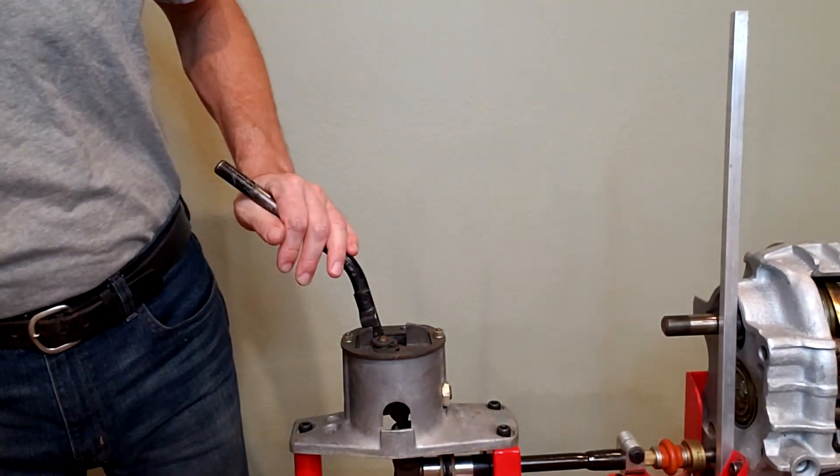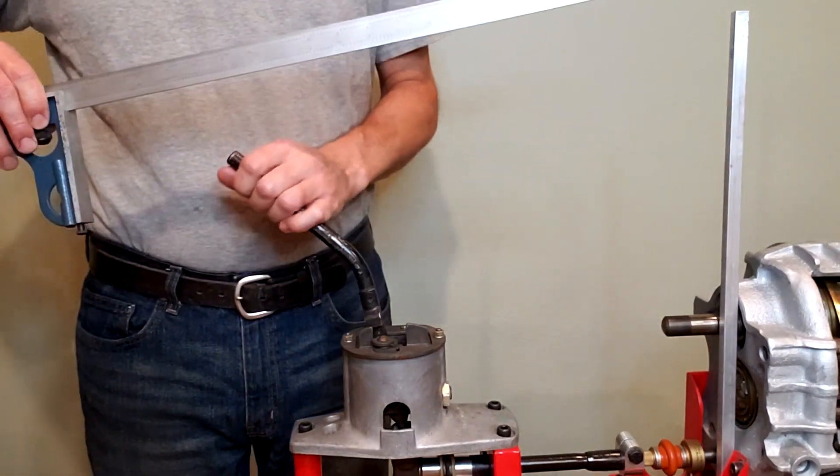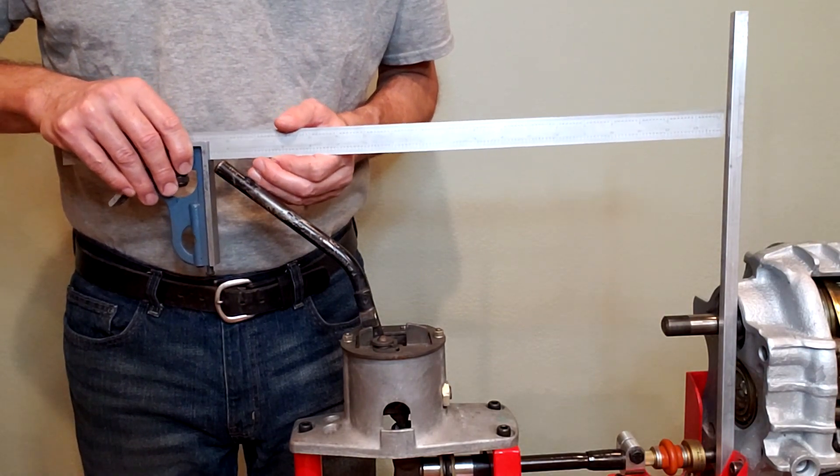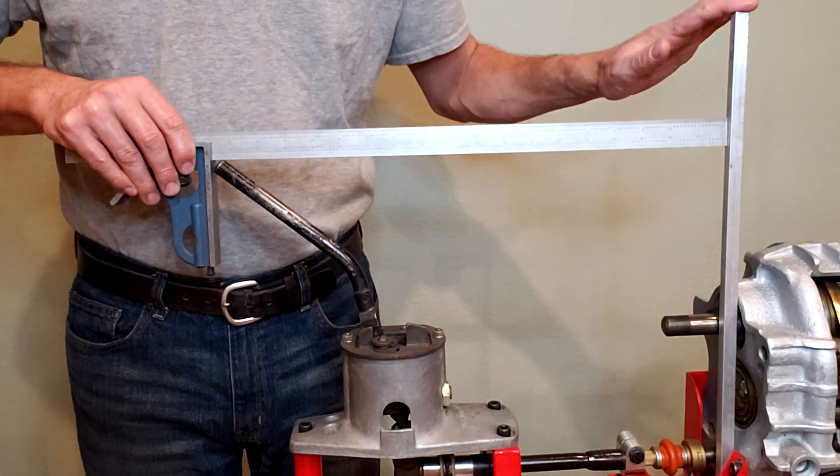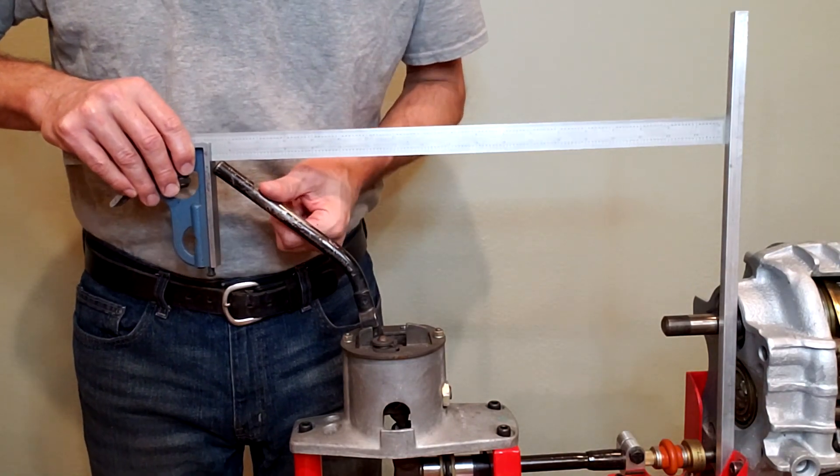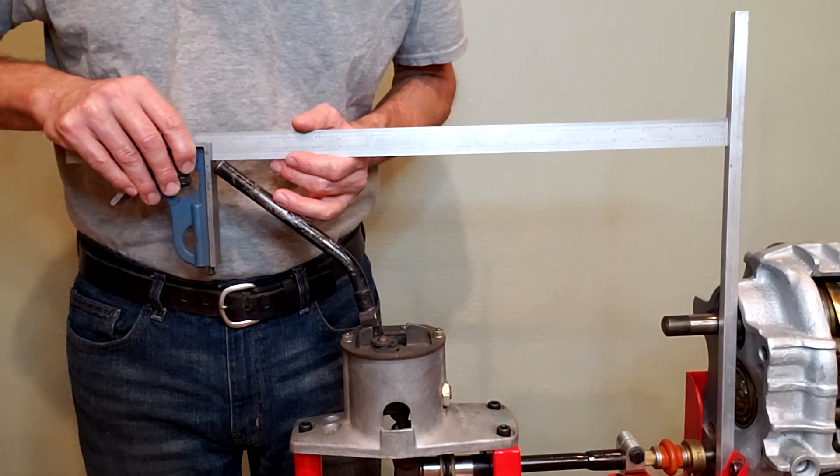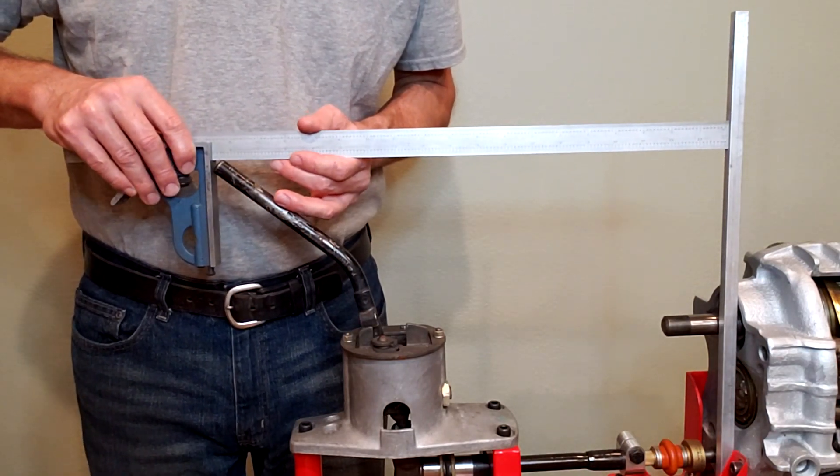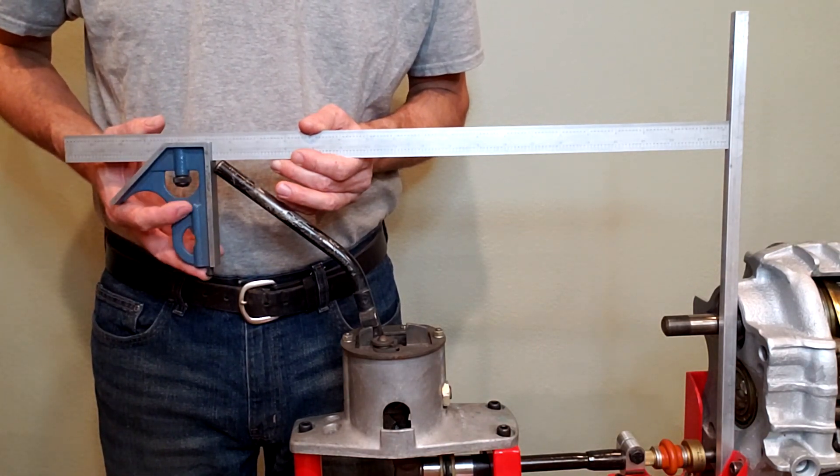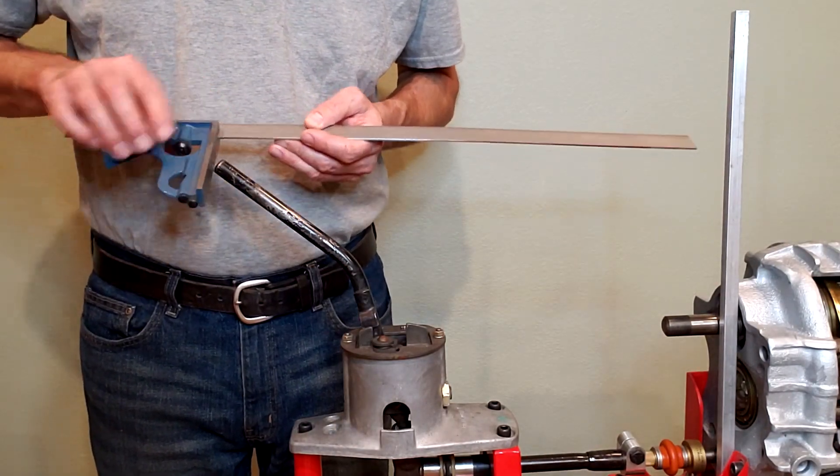The first thing I'm going to do is take a machinist rule and we'll set that up to measure the distance to a datum line fixed over here on my mock-up transmission with the shifter in the rear position. Obviously I've done this initially before I started the camera so I have that length set on the ruler.